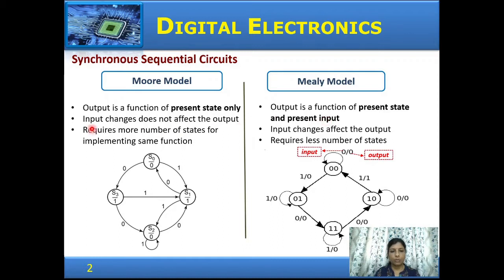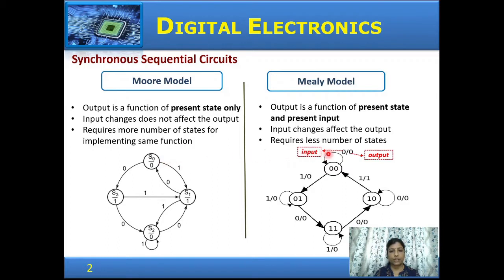In the Moore model, input changes do not affect the output directly — input changes change the state of the flip-flop, and thereby the output differs in different states. Whereas in the Mealy model, input changes affect the output directly. Also, the Moore model requires more states to implement the same function compared to the Mealy model.